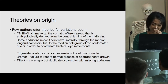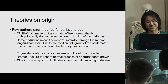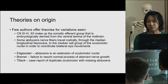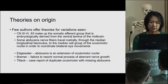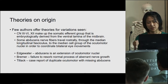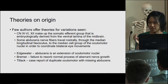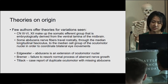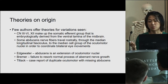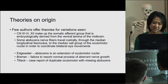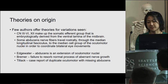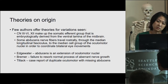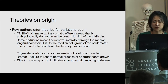How does this occur? Looking through the literature, very few authors offer theories — most just document the variations. What is known is that cranial nerves 3 to 6 and 12 make up the somatic efferent group, embryologically derived from the ventral lamina of the midbrain. It is also known that some abducens nerve fibers travel rostrally through the medial longitudinal fasciculus, which helps coordinate bilateral eye movements, to reach the ocular motor nuclei. Some authors postulate — for example, Edgewater postulated — that the abducens nerve is actually an extension of the ocular motor nuclei.